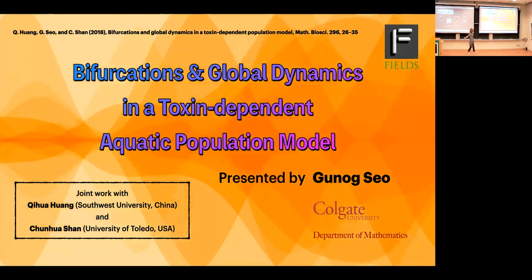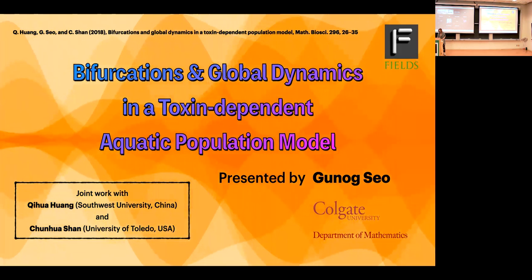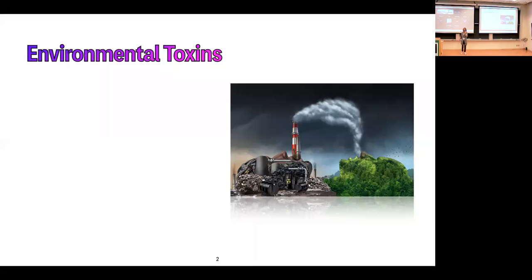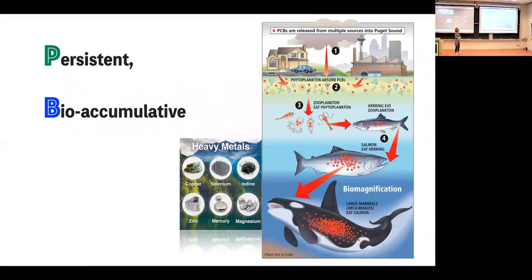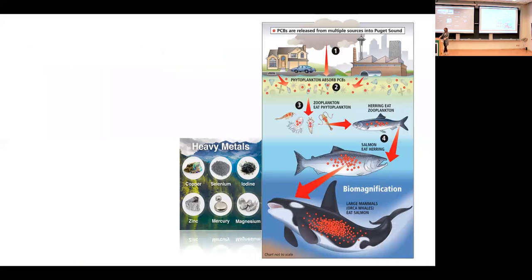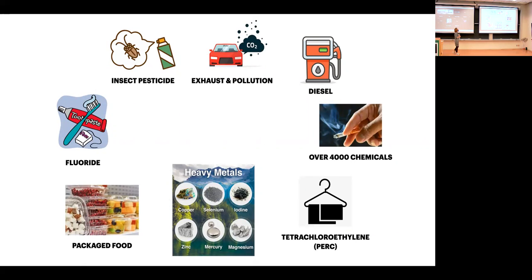First, environmental toxins. Environmental toxins are hazardous, very dangerous natural compounds or human-made chemicals when toxin levels are consumed or absorbed. Every day we are exposed to many toxins—for example, insect pesticides, packaged foods, household products, environmental pollutions, heavy metals, and so forth.